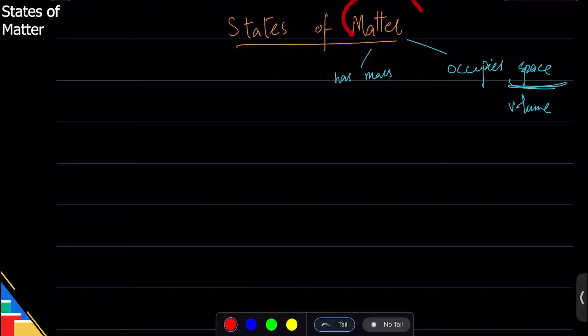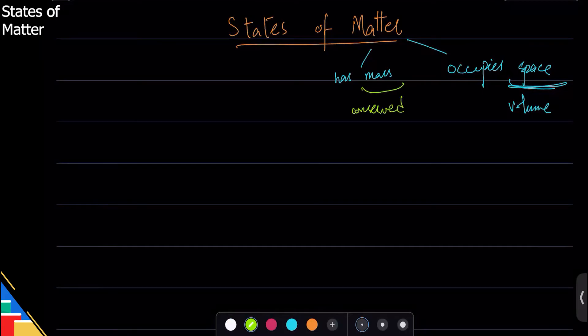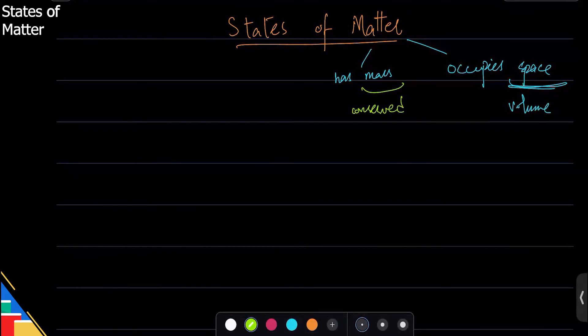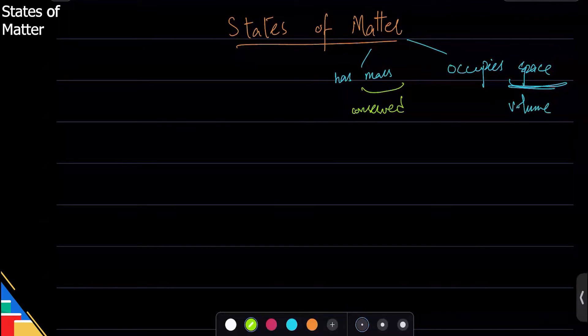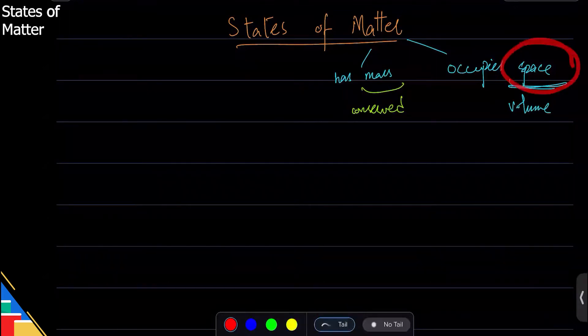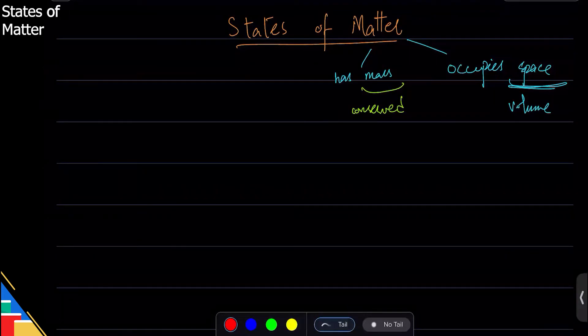The interesting part is that matter has mass regardless of what state it is in. Mass is something that is conserved - conservation means it does not change when the state changes - but volume changes, and that is the primary difference between different states.